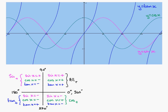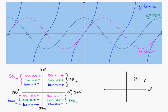We can summarise these results in a simple diagram — the quadrant diagram. With 0 degrees here, then 90, 180, 270, and back to 360: in the first quadrant, they're all positive, so I'll write A for all positive. In the second quadrant, only sine is positive, so I'll put S. In the third quadrant, tan is positive, so T. And in the fourth quadrant, cosine is positive, so C. We have: All, Sine, Tan, Cos.